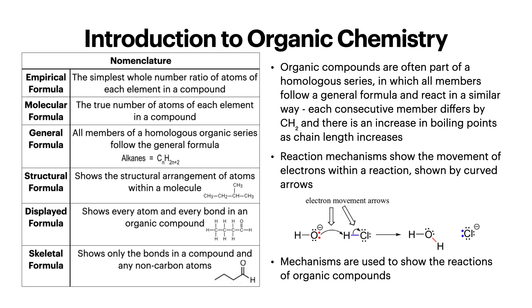Starting off with the introduction to organic chemistry, we have a lot of formula terms we need to learn. First, empirical formula — this is the simplest whole number ratio of atoms of each element in a compound. Then molecular formula — the true number of atoms of each element in a compound. General formula — all members of a homologous organic series follow a general formula, for example alkenes follow CnH2n+2.